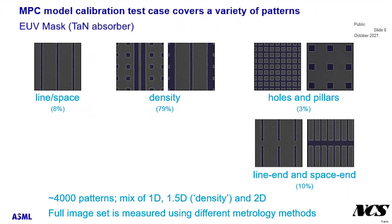We have applied this to MPC. Here is an example of some images from an EUV mask with a tantalum absorber that were used for the MPC model calibration. It is a quite diverse pattern set, including lines and spaces, holes and pillars, line ends and space ends, as well as a number of features designed to investigate the behavior of lines in the presence of different pattern densities. In total, there were approximately 4,000 patterns, and this set was used to do the model calibration.